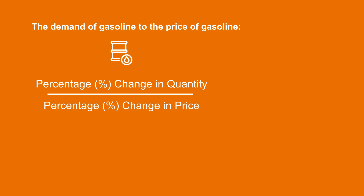For instance, the price elasticity of demand is equal to the percentage change in quantity divided by the percentage change in price. An example is the elasticity of the demand of gasoline to its price. When the price of gasoline increases by 60%, the quantity of gasoline demanded decreases by 15%. As a consequence, the elasticity of the demand of gasoline to the price of gasoline is equal to minus 15% divided by 60%.